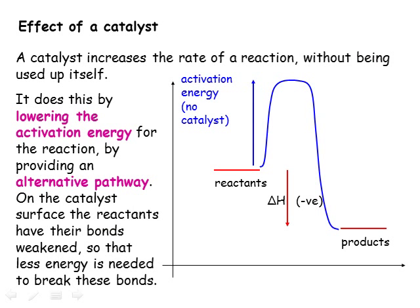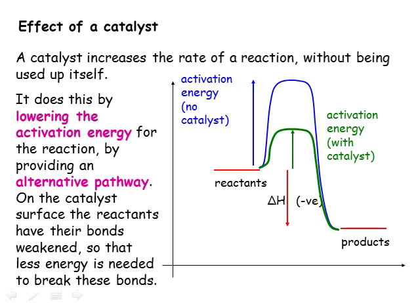The effect of a catalyst on a reaction can also be shown using an energy level diagram. Remember that a catalyst works by lowering the activation energy, so it takes less energy to break the bonds in the reactants. However, the overall energy change, delta H, remains exactly the same regardless of whether a catalyst is used.